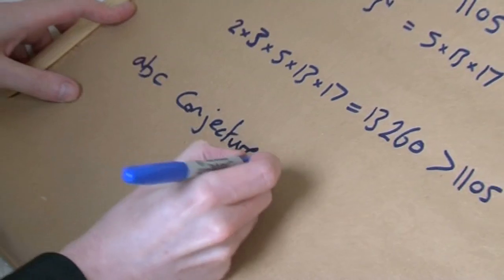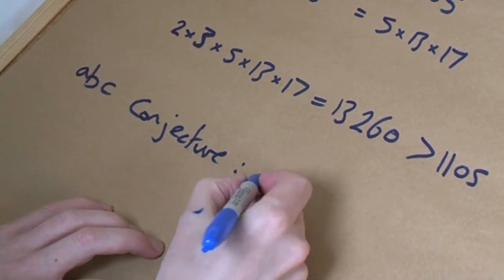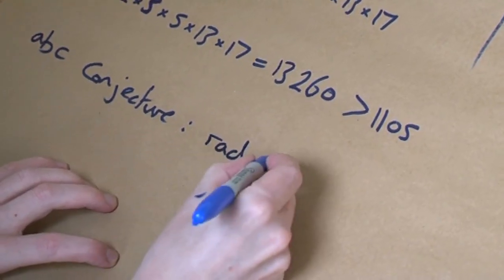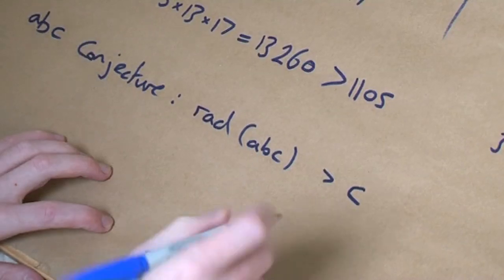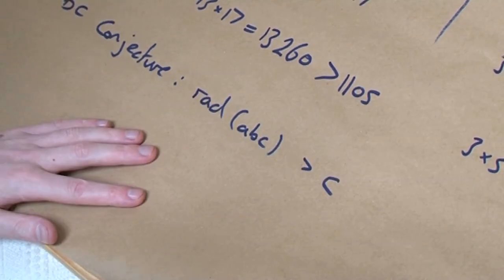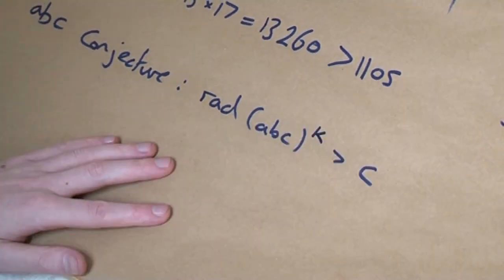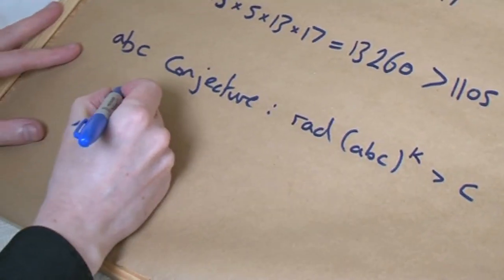It's called the radical because it is well wicked. The ABC conjecture is the radical, which I told you how to work out, is bigger than the right-hand side. That's what you get normally. In fact, the conjecture is more than that. It talks about the powers of that too. But there are exceptions.